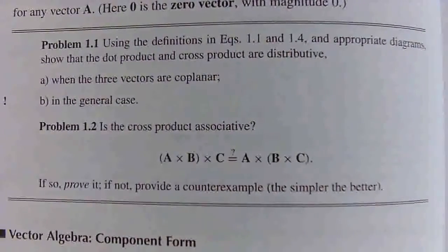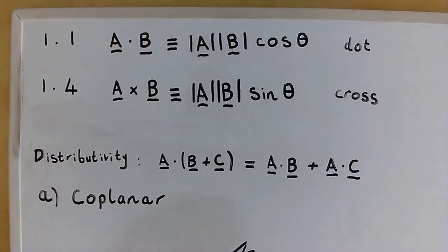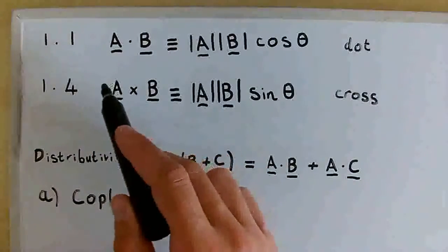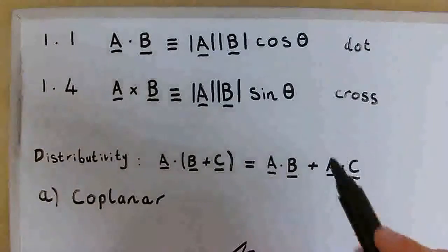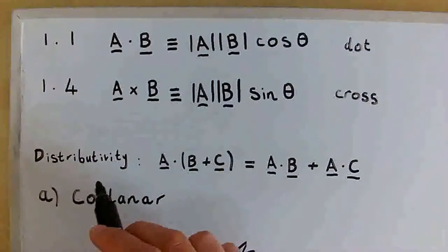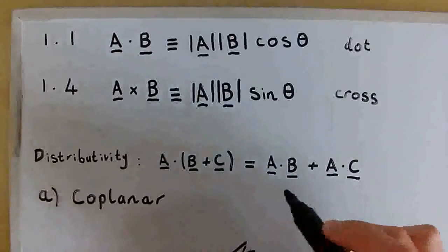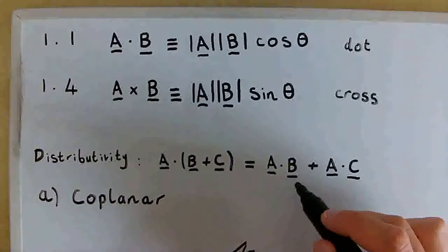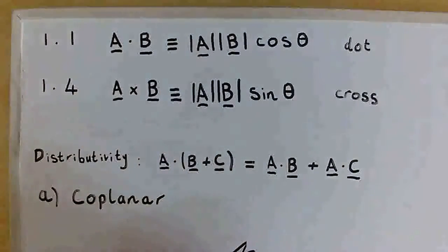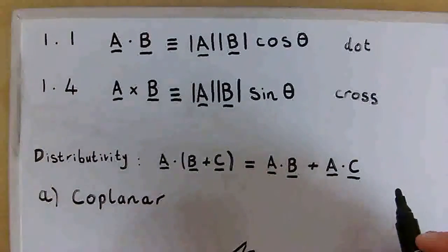We'll start with part A, when the three vectors are coplanar. The equations we need, 1.1 and 1.4, are written here, and these are the basic definitions of the dot product and the cross product. We're trying to prove distributivity, and we'll start with the dot product. That just means that the dot product of A and B plus C is equal to the dot product of A and B plus the dot product of A and C. First it wants us to use the coplanar case, where all three vectors A, B, and C lie in the same plane.